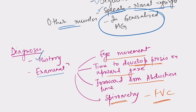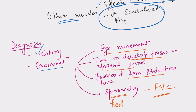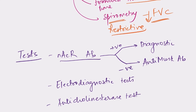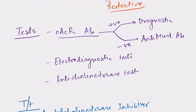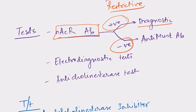Spirometry is done to look for involvement of respiratory muscles; forced vital capacity (FVC) is very important. Because the muscles of the chest are involved, expansion is impaired — this causes a restrictive lung disease pattern and FVC will decrease. As an investigation, detection of nAChR antibodies is key. If these antibodies are found, it is diagnostic of myasthenia gravis; however, if they are negative, it does not rule out the disease.